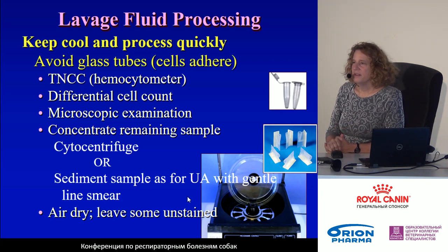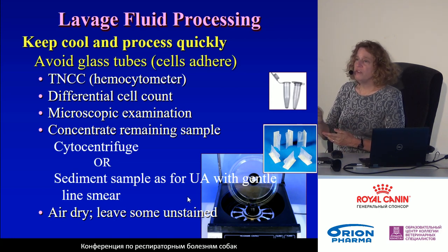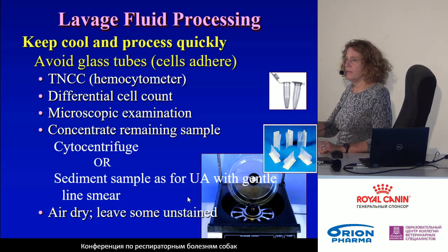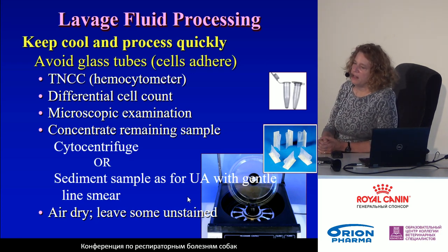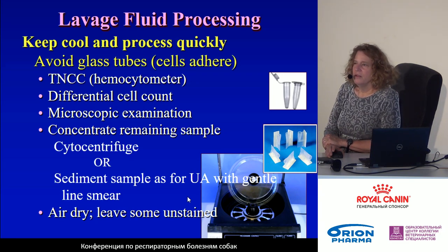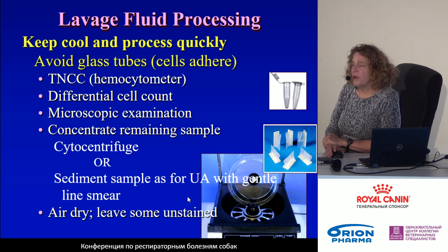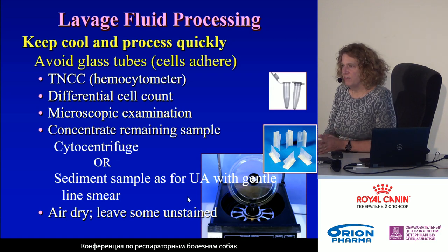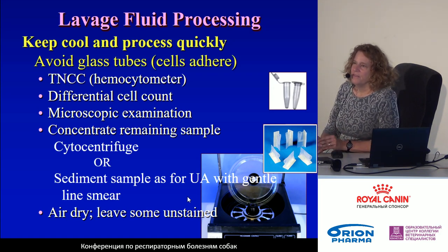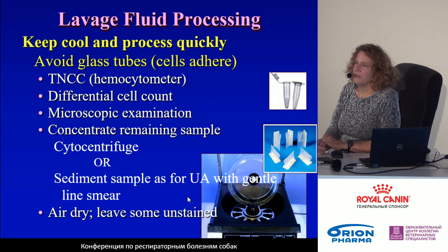You then make a gentle smear on the microscope slide of the concentrated cells. Let the slides air dry — don't heat fix. Then you can either stain them yourself for examination or send them to the laboratory to stain. If you examine the smear yourself, be sure to do a differential count — count several hundred cells and see how many are alveolar macrophages, how many neutrophils, how many eosinophils, etc.